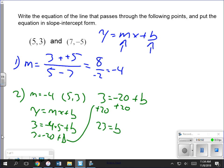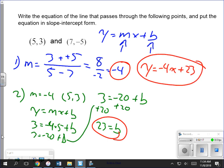That gives me my b, and this is my m. So I plug b and m into the equation for my final answer: y equals negative 4x plus 23. That is my answer.